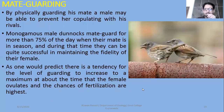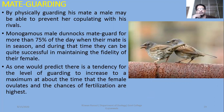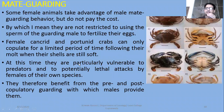There is a tendency for the level of guarding to increase to a maximum at about the time that the female ovulates and the chances of fertilization are highest — the mate guarding is also highest at that time. However, mate guarding does not always pay off, as females are not restricted to using only the sperm of the guarding male to fertilize their eggs — extra pair copulations can still occur. For example, crabs can only copulate for a limited period of time following their molt when their shells are still soft. At this time they are particularly vulnerable to predators and to potentially lethal attacks by females of their own species. They therefore benefit from pre- and post-copulatory guarding, which increases the sperm success ratio and offspring ratio.